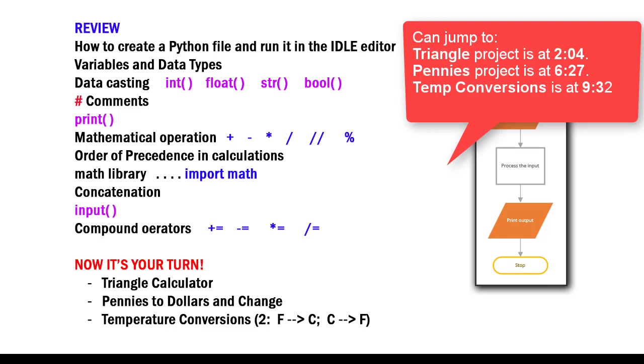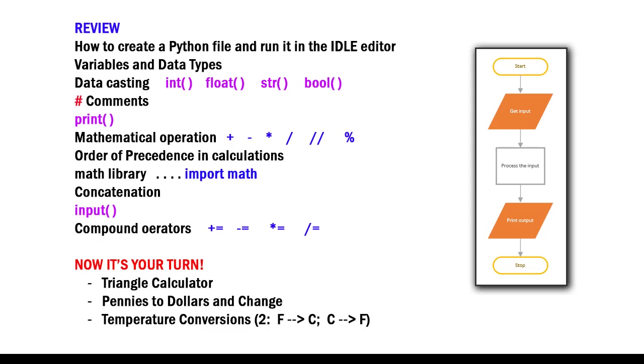The different data types being integer, float, string, and boolean. And we've learned how to cast between those different data types using the keyword or the key method for each of those data types.